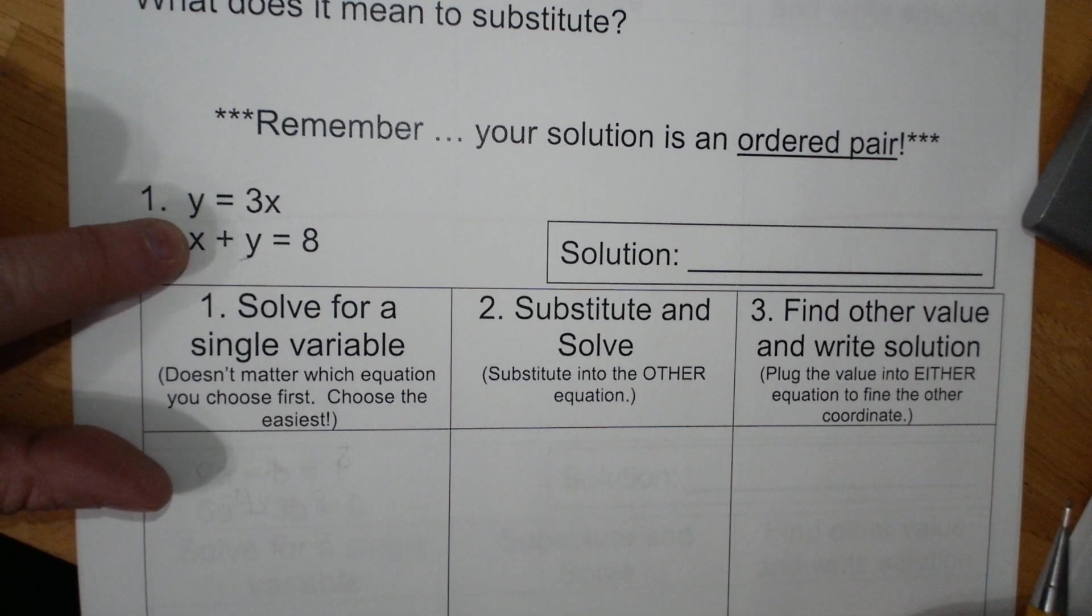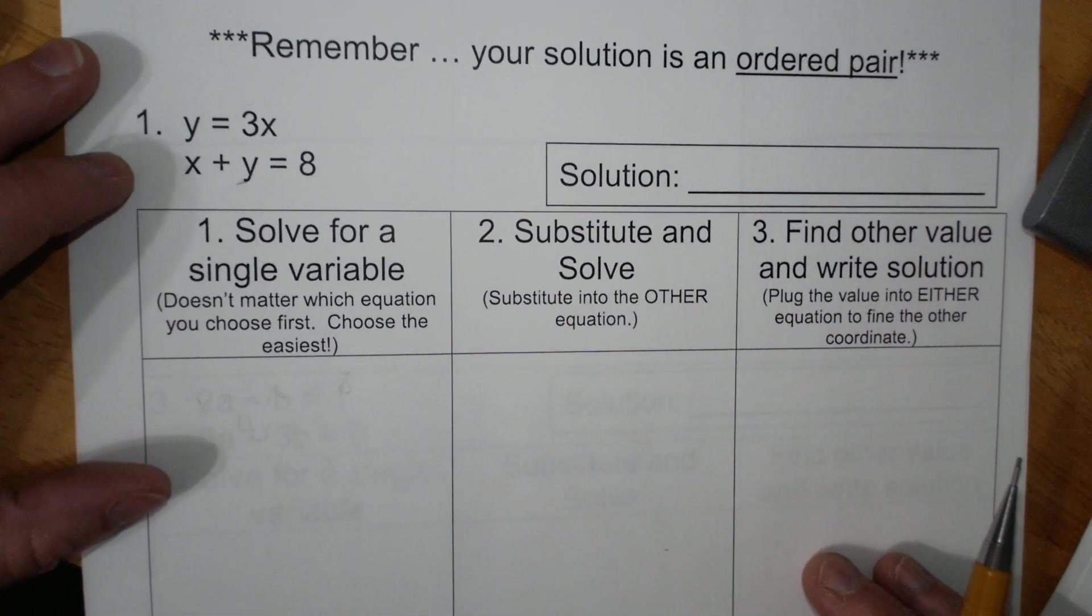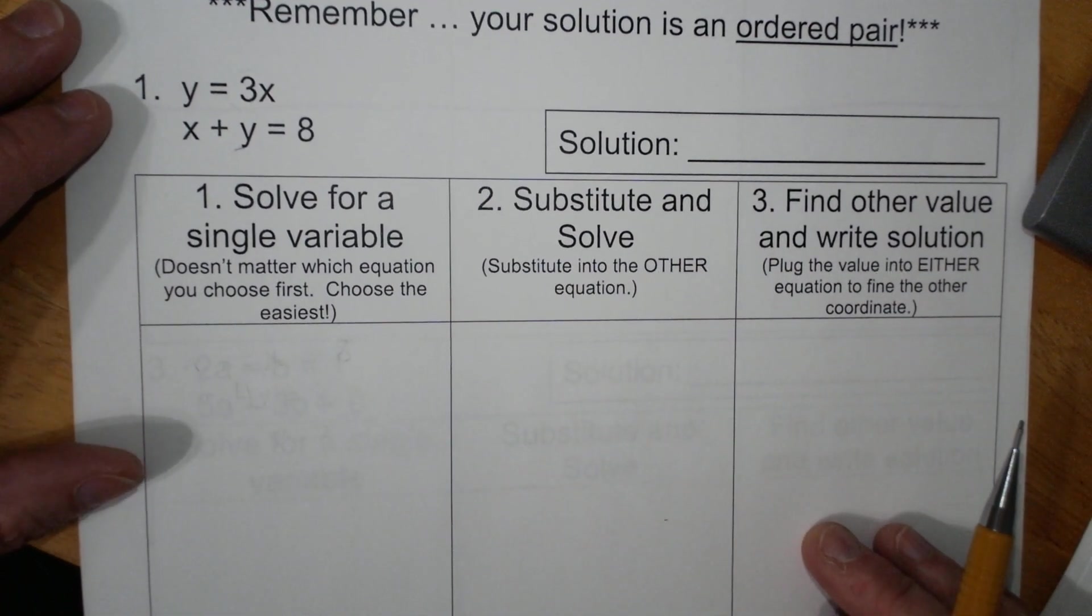you are going to have a solution that is an ordered pair. You can actually do this with three variables, an x, a y, and a z, or any three. In Algebra 1, we're going to just stick with the two variables.